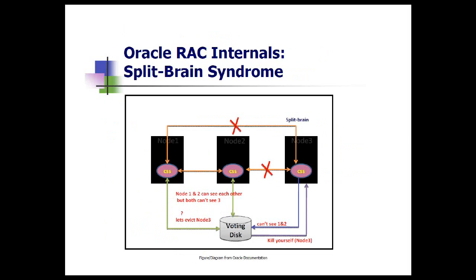Node one and node two go to the voting disk and they see: yes, we both can see each other, but we don't see node three. At the same time, node three cannot send the network heartbeat to nodes one and two, but it goes to the voting disk and reads and updates its voting disk. However, when it goes to the kill block for node three, it sees that it has been overwritten — overwritten by the other nodes because they cannot see it, so they decide to evict it from the cluster to maintain synchronization.